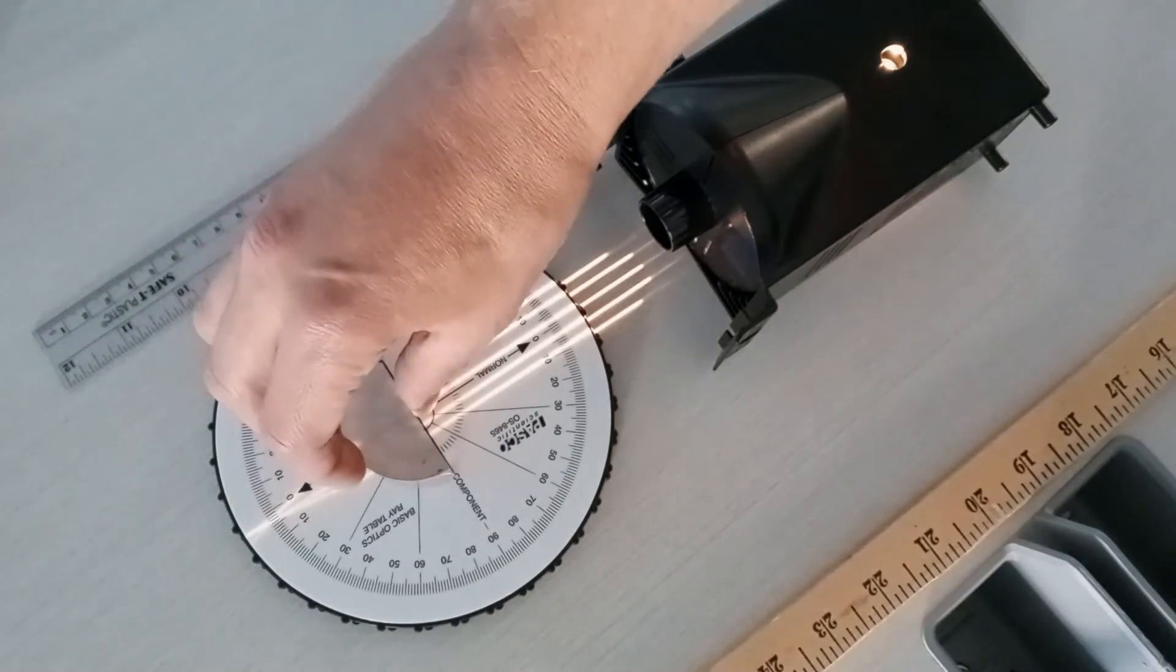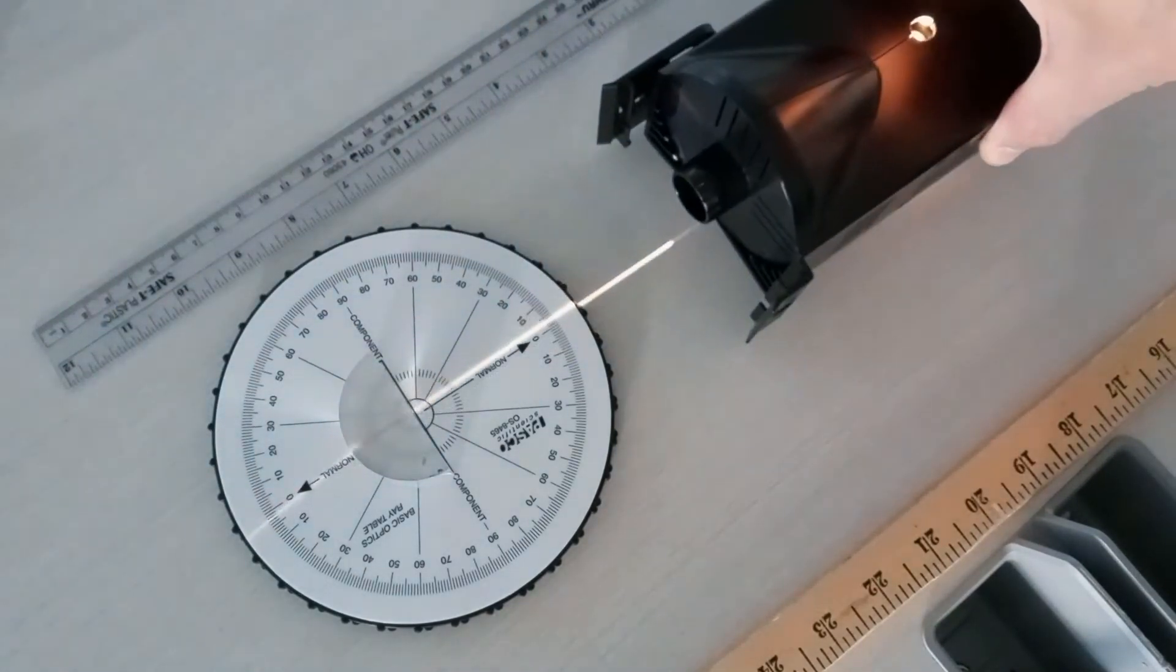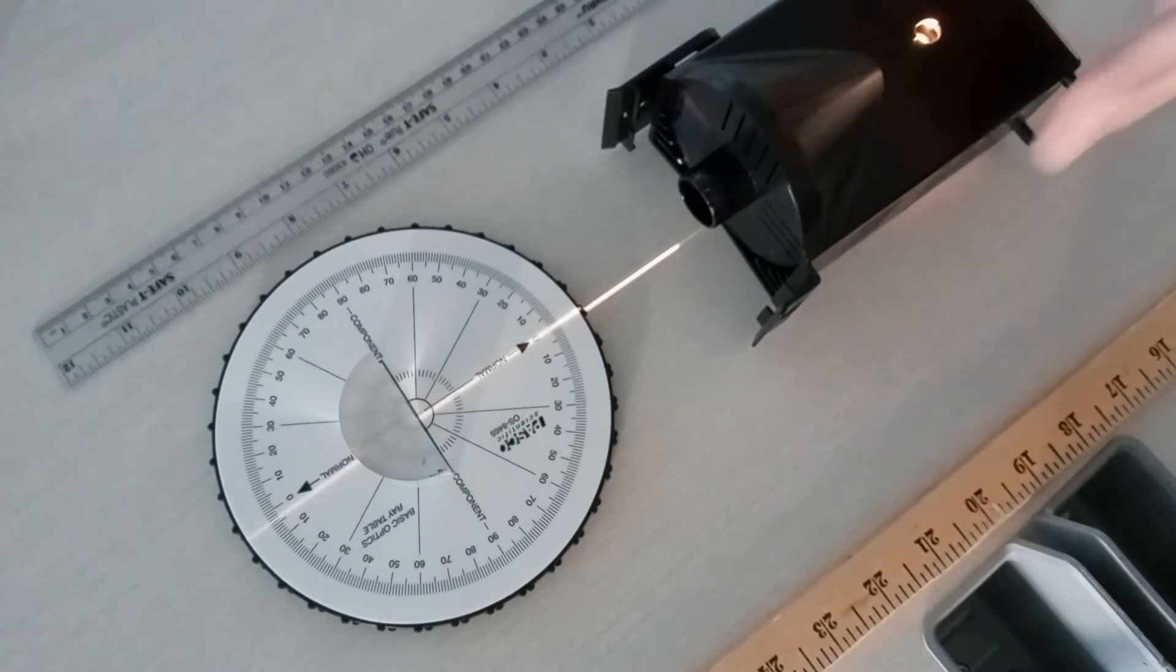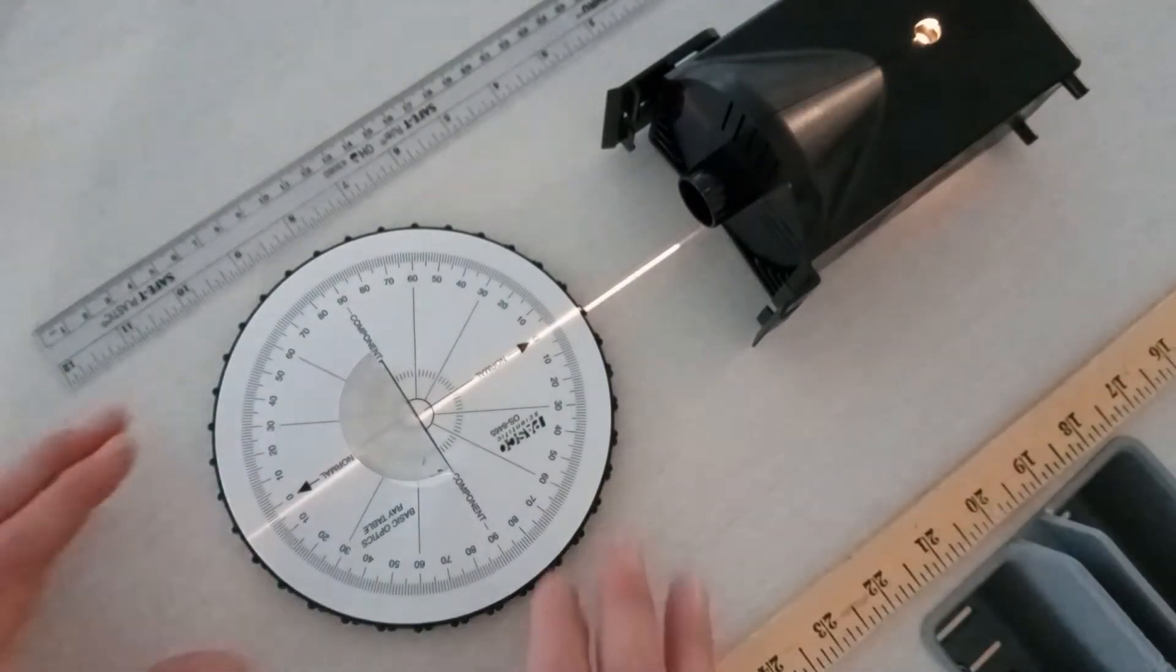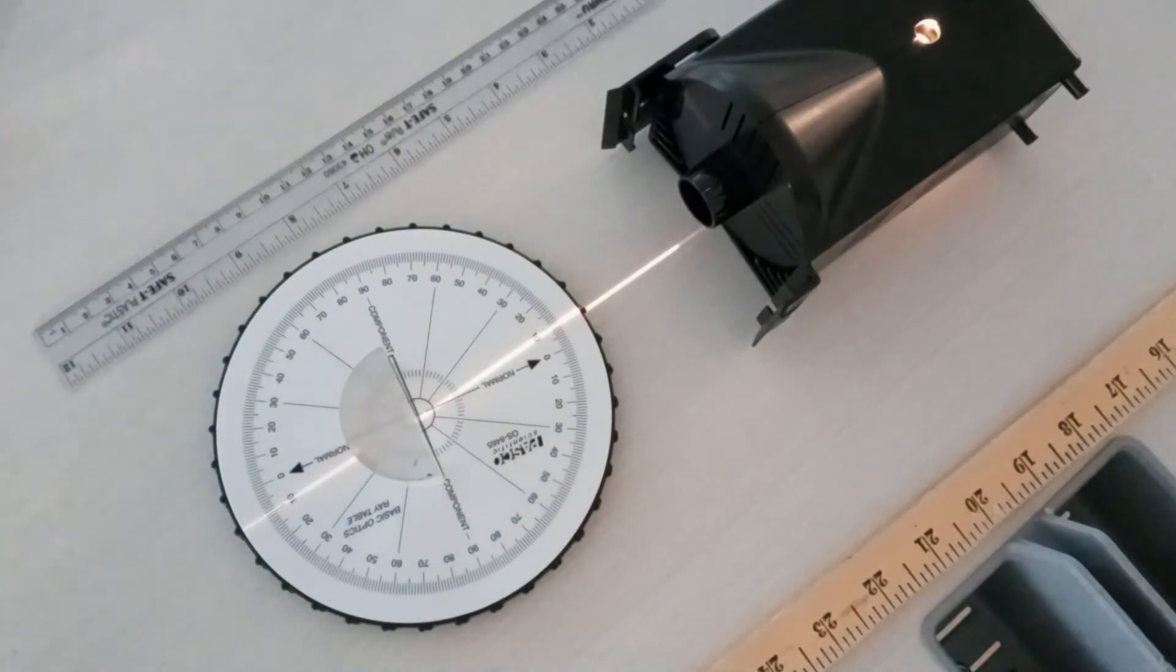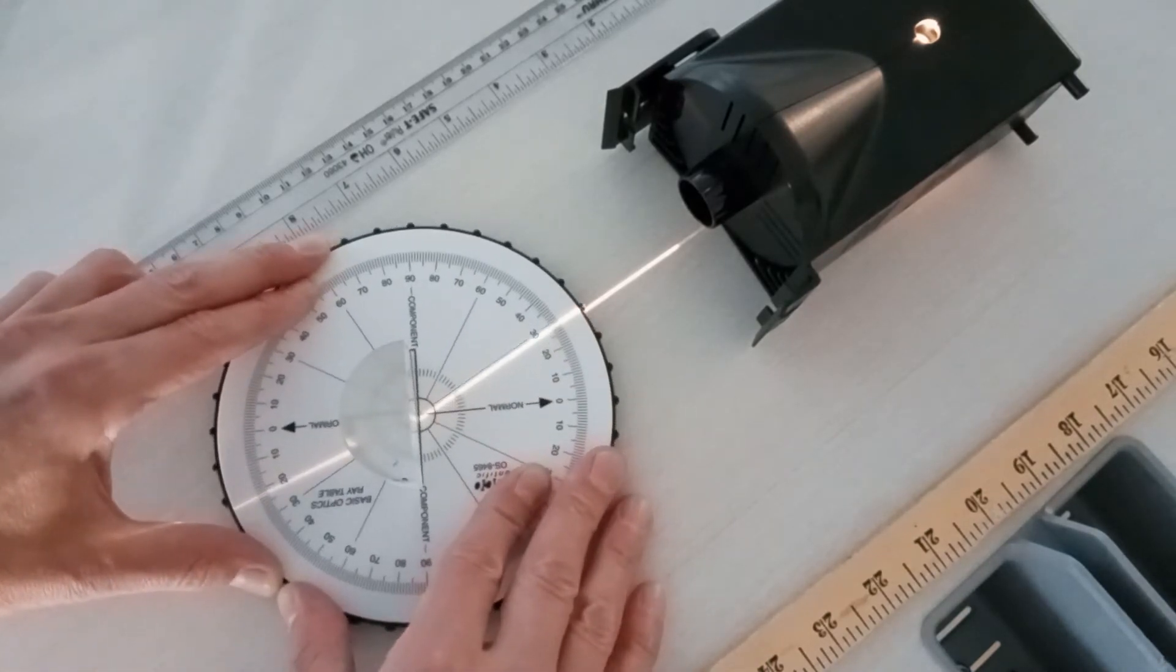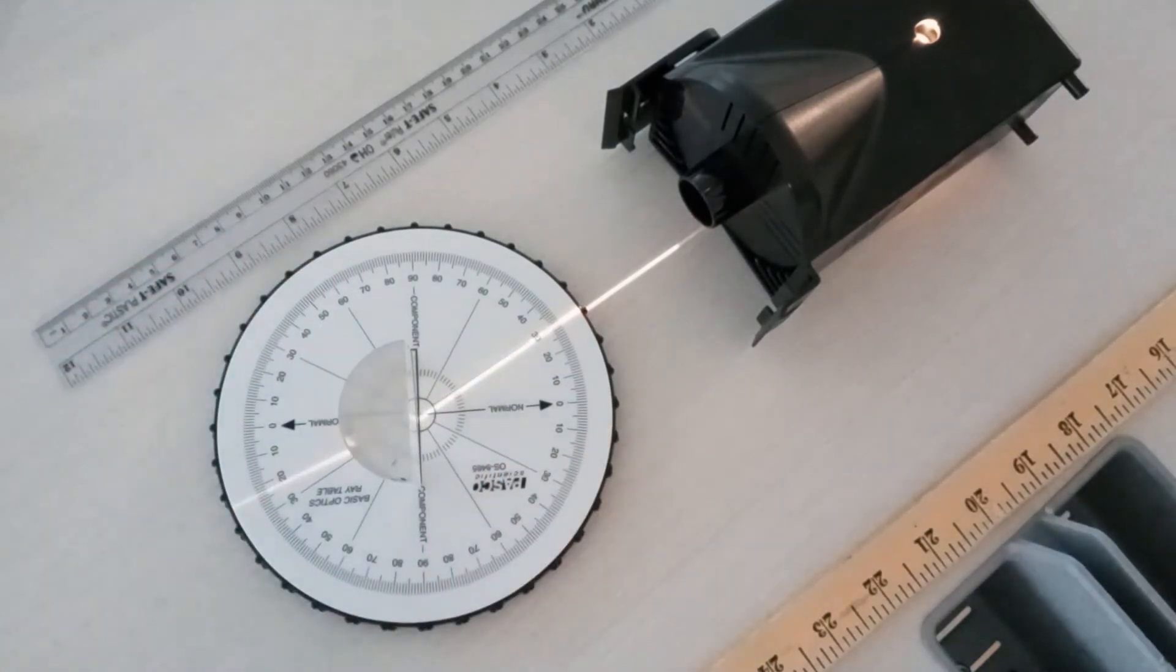Now we'll study a half circular lens. We project a beam at the flat side of the half circular lens. The beam hits the flat side at an angle, but when it exits the curved side, it's always perpendicular to the surface, so it's only refracted once. This makes it easy to study the incident and refracted angles.